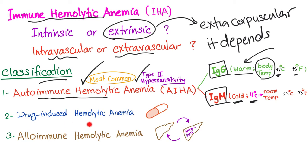The second subtype is drug-induced hemolytic anemia, which is very high yield for the boards. The third subtype is alloimmune hemolytic anemia.